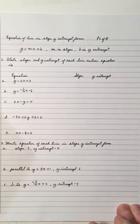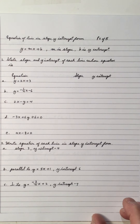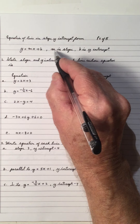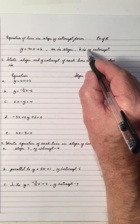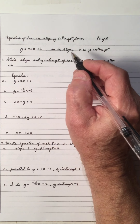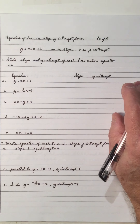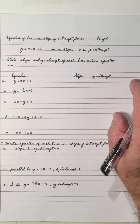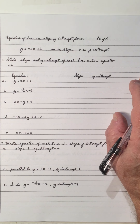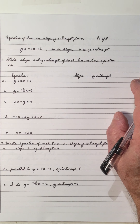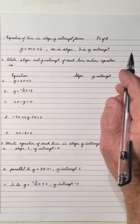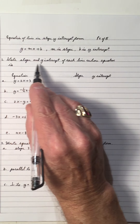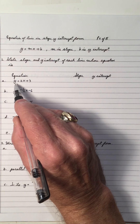Welcome to my video on finding the equation of a line in slope y-intercept form. The equation of a line in slope y-intercept form is y equals mx plus b, where m is the slope and b is the y-intercept. This is also done in an earlier unit on the equation of a line, so check out that unit to review these concepts in coordinate geometry.